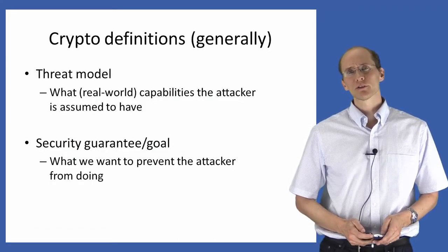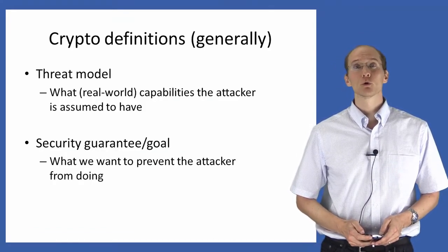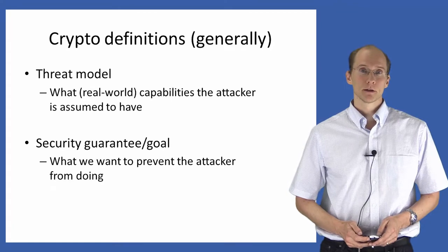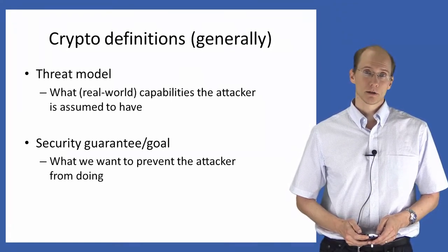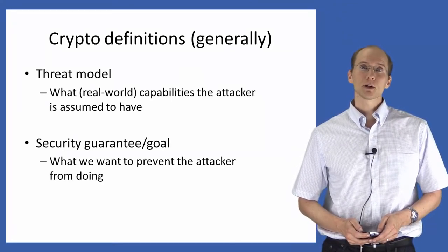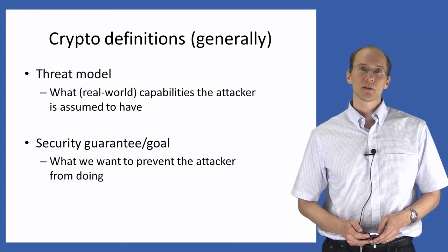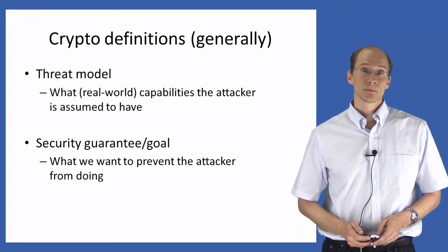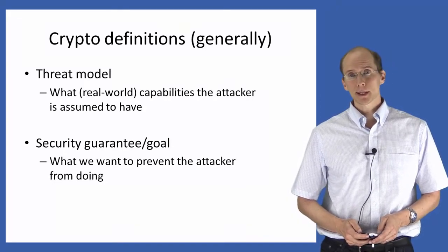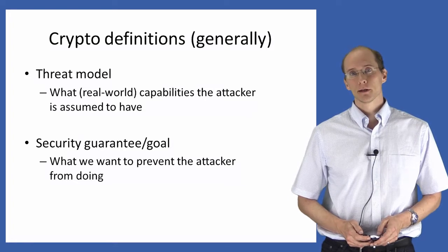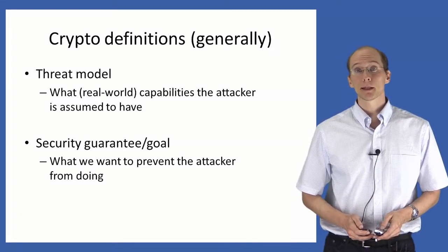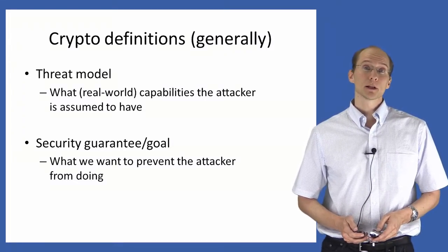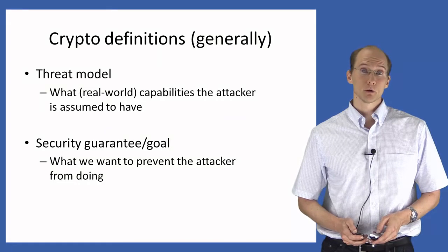In general, cryptographic definitions have two components. The first component specifies the threat model, which is meant to capture the real-world capabilities that the attacker is assumed to have. As we'll see, there can be many different threat models, and the right one to use depends in part on the environment in which the scheme will be used.